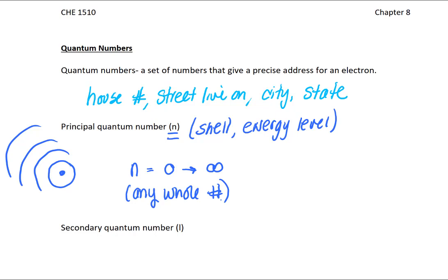So this is telling you your shell number. When you look at your electron configuration, the n is here. So this is describing your n value.